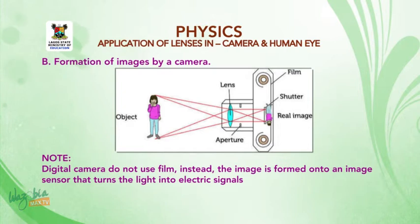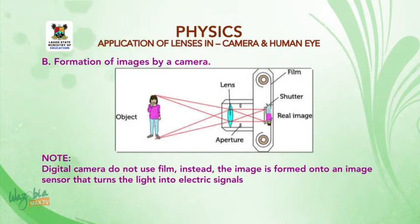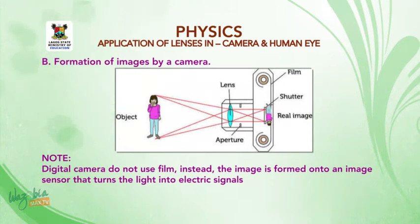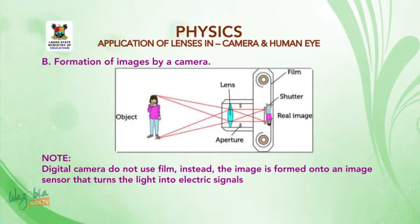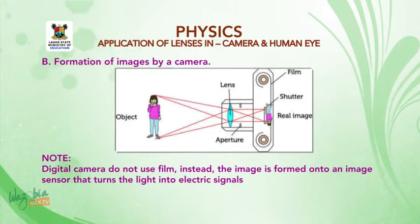Note that digital cameras do not use film; instead the image is formed onto an image sensor that turns the light into electric signals.